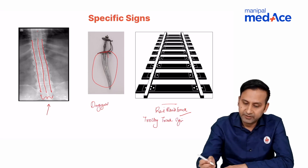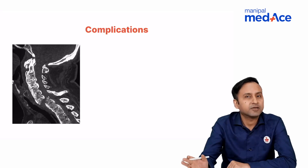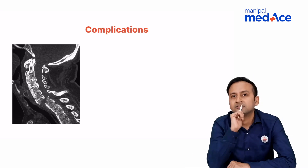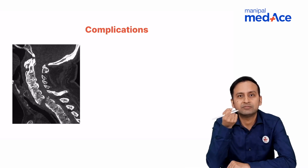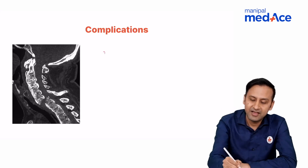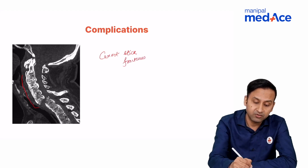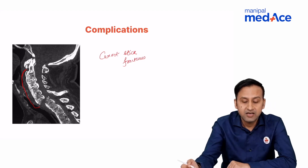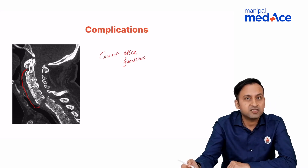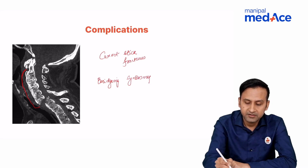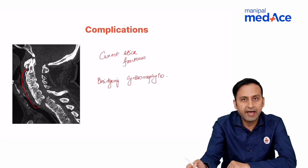If the interspinous ligament also gets ossified in addition to both intertransverse ligaments, three lines are visible — this is called the trolley track sign. Because the bamboo spine is very brittle, it can break like a carrot — resulting in carrot stick fractures. Large bridging osteophytes across the intervertebral spaces are called bridging syndesmophytes, another characteristic feature of ankylosing spondylitis.